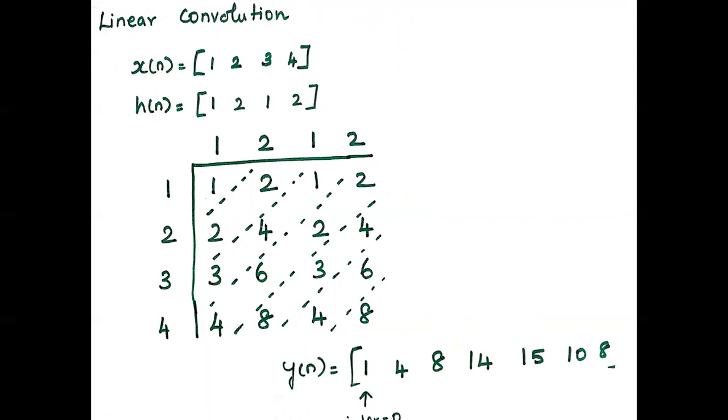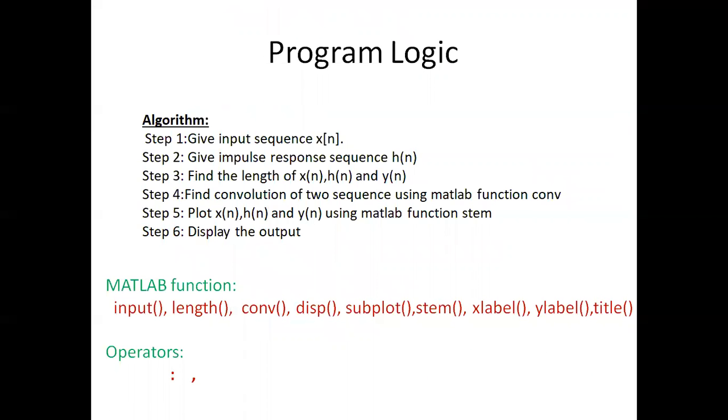To compute linear convolution using MATLAB, we need to follow these steps: First, get the input from the user, x(n) and h(n). After getting the input, calculate the length of x(n), h(n), and y(n). Find the convolution of two sequences using the MATLAB function conv, then plot the signal using stem and display the output.